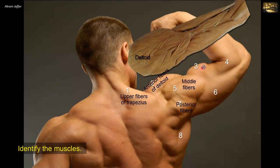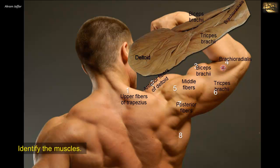Number 3 is the most superficial muscle of the flexor compartment of the arm — the biceps brachii. Opposite it is the triceps, the muscle of the extensor compartment of the arm. Number 4 runs from the arm, crosses the elbow, and is located on the lateral side of the forearm — the brachioradialis muscle. Number 8 arises from the lateral border of the scapula; this is teres major, which together with the tendon of latissimus dorsi forms the posterior axillary fold.